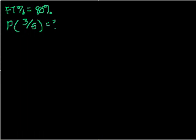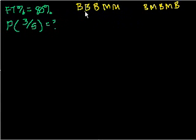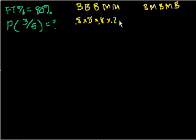What is the probability of any particular combination of making 3 out of 5? Let me pick a particular combination — basket, basket, basket, miss, miss. That's making 3 out of 5. The probability is 80% chance of making the first basket, times 80%, times 80%, then times 20%, times 20%. So this equals 0.8 to the third power times 0.2 squared.